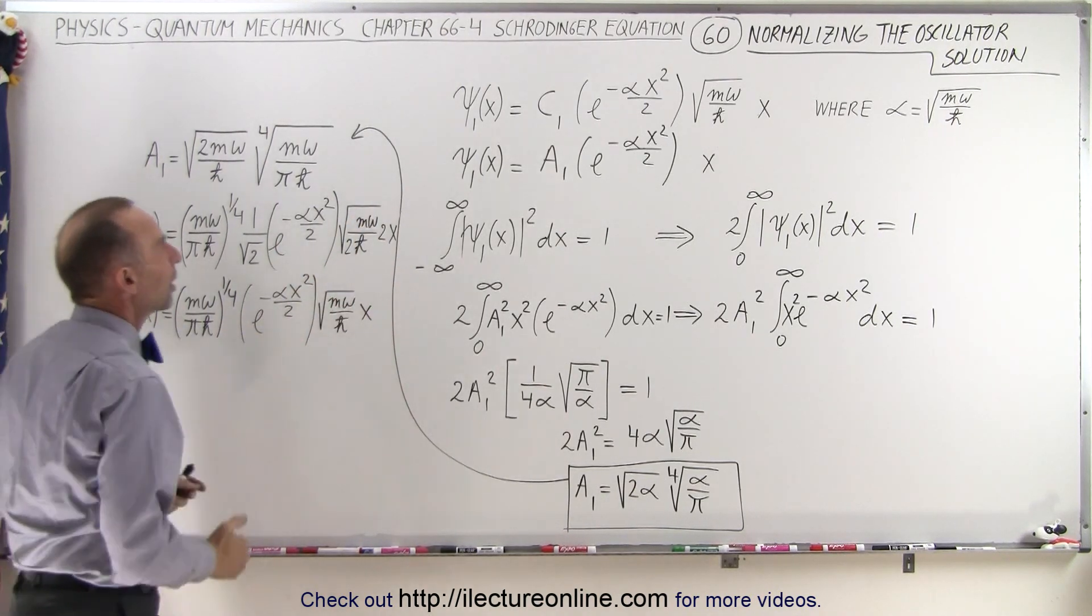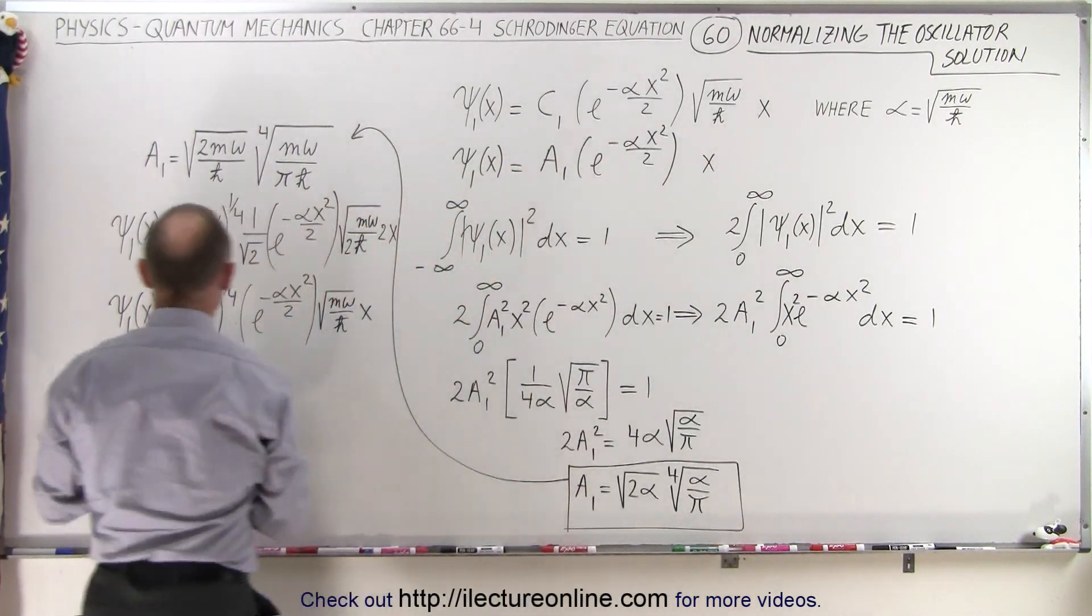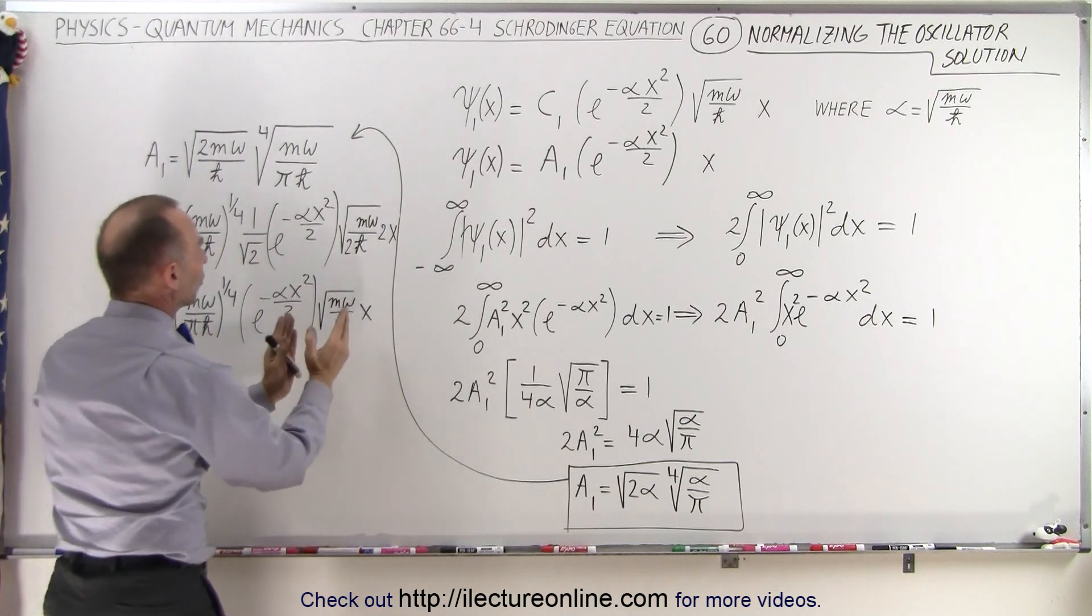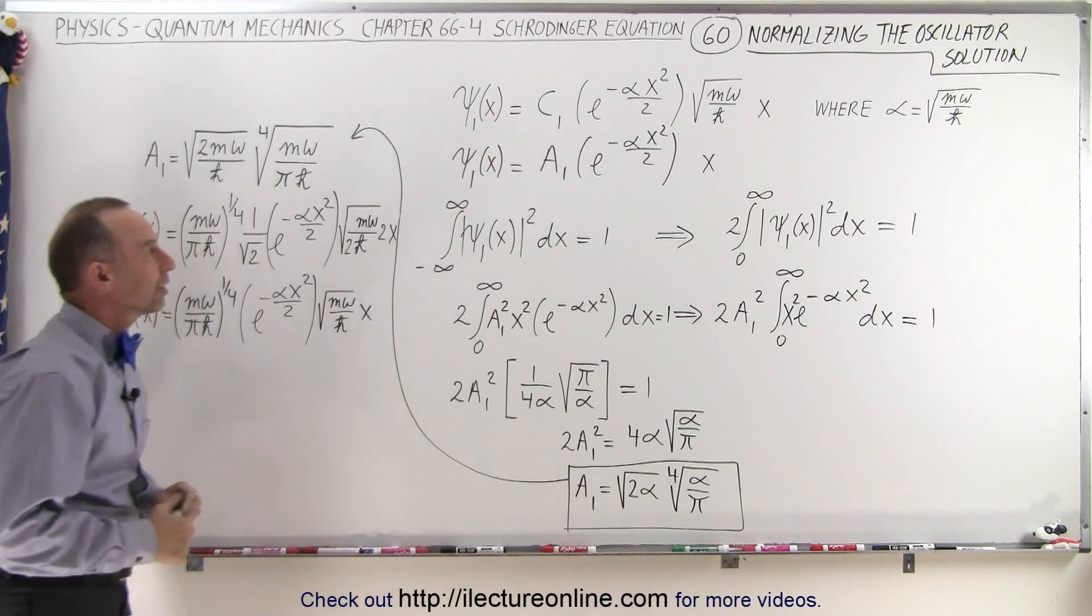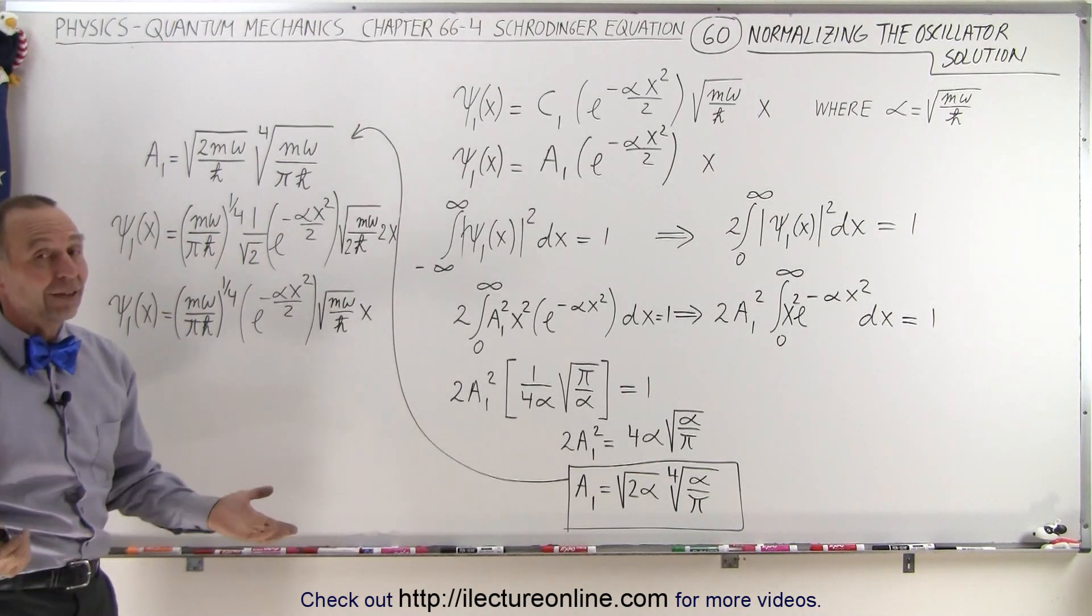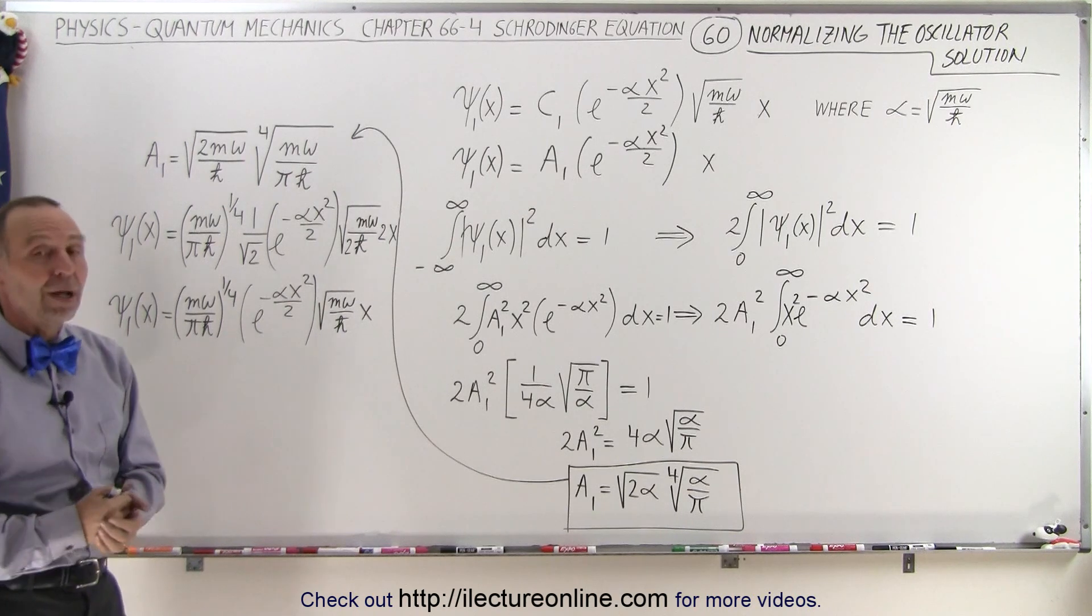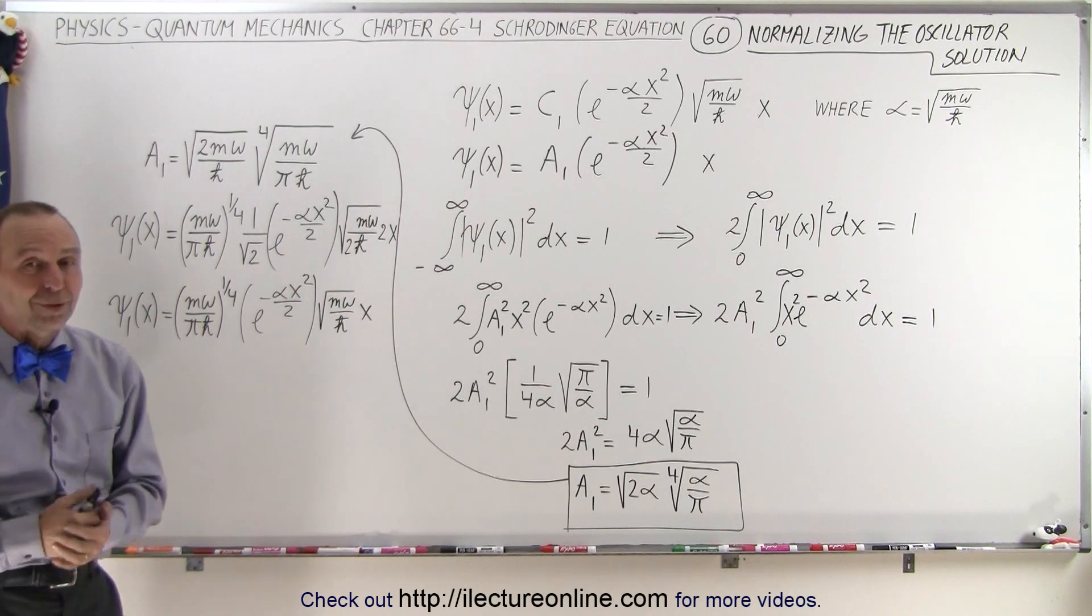We end up with the exact same equation that we started with over here, where a1 is going to be the product of the fourth root of this, and the square root of this. And so that gives us the equation that we were looking for, and that's how we normalize the function describing the harmonic oscillator, or the quantum harmonic oscillator, and that's how it's done.